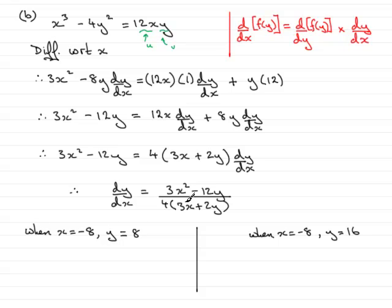So when we put these values into here, you should find that we have dy by dx equals, I'll put the values in but all you're going to need to do is just work it out on a calculator. So we have 3 times minus 8 squared minus 12 times the y value of 8, all divided by 4 times 3 lots of x which was minus 8 plus 2 times the y value which was 8. Close the square brackets off. Work that out and what you should find is that you get minus 3.